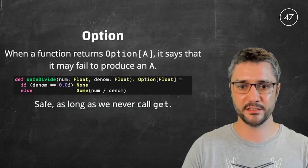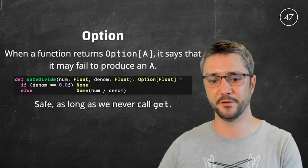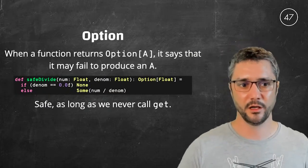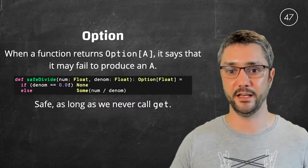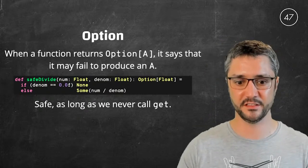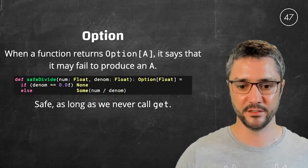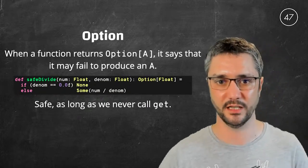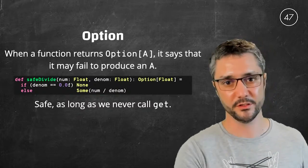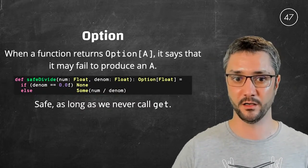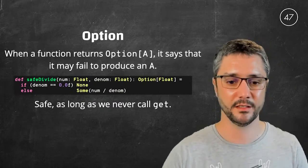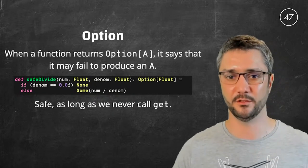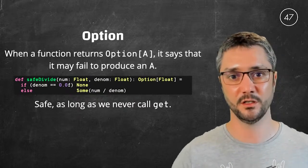So let's dive a little bit into them. So option is for representing operations that may fail to compute a result. So for example, if we want to divide a number by another, there is one case where this might fail to return a result. And that's if the denominator is zero. So in order to be safe and to lift the possibility of an error at the type level, we just return an option of float as a result. If the denominator is zero, we return None saying we are not able to compute a division by zero. And in the other cases, we wrap the result in a Some. And this is safe, as long as we never call the unsafe methods on option, such as get and so on.